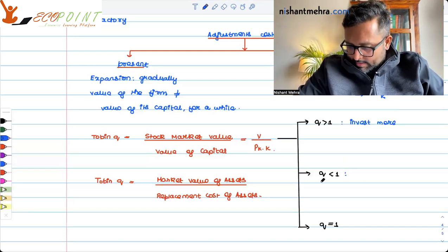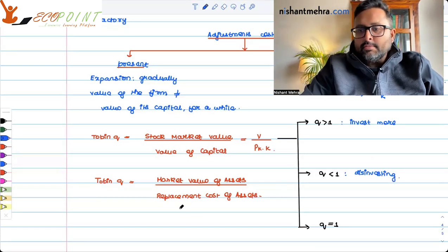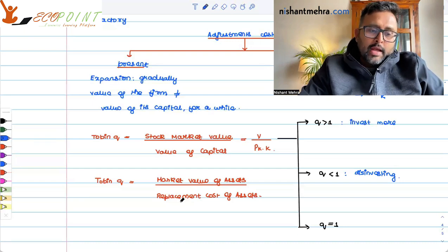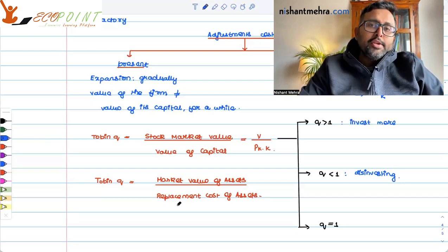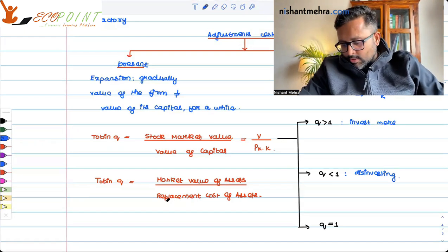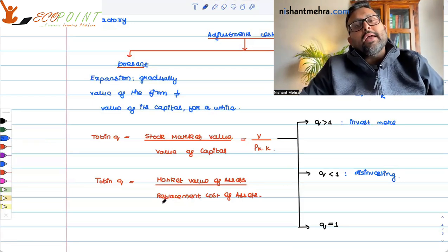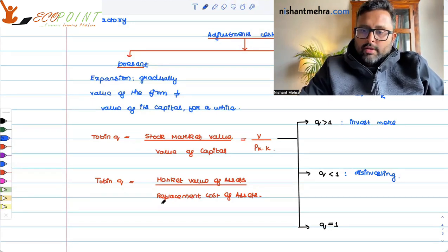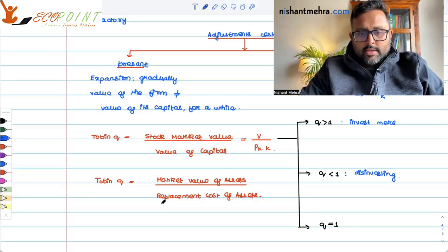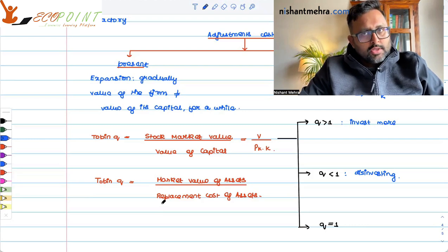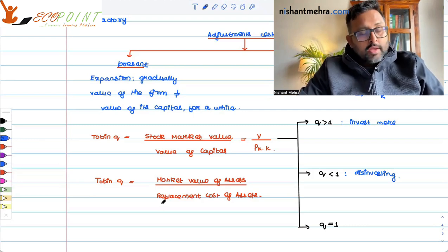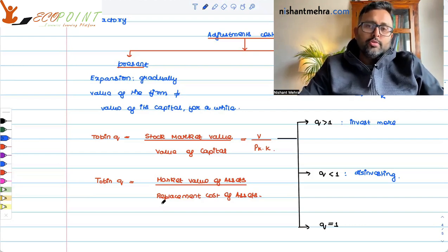When Q is less than one, this is the time the firm should be disinvesting and reduce its investment in capital. This is also the time when the stock market is valuing the firm at a price less than the value of its replacement, so it is also the opportunity for the company to buy back and repurchase its own shares. When Q is equal to one, the stock market is valuing it at its market value — there is no premium and it is not valued at a lower price. In general, if there are no adjustment costs, the value of Q should revolve around one.